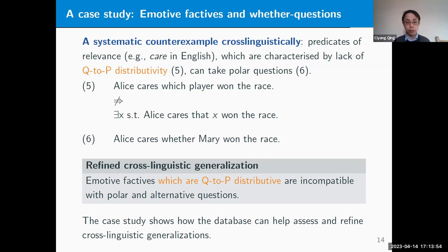As we can see, such predicates of relevance indeed can take polar questions. This suggests a refined cross-linguistic generalization where we restrict our attention to emotive factives that are Q2P distributive. As far as we can tell from our database, the refined cross-linguistic generalization seems pretty robust—such emotive factive predicates are indeed incompatible with polar or alternative questions. But this is just a case study showing how the database might help assess and refine cross-linguistic generalizations.